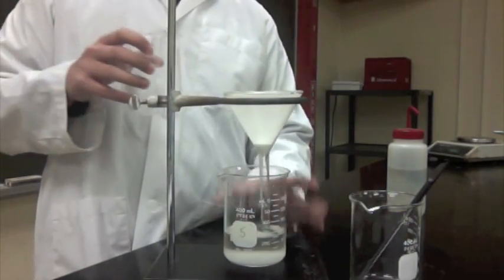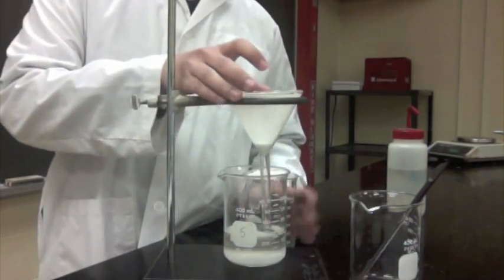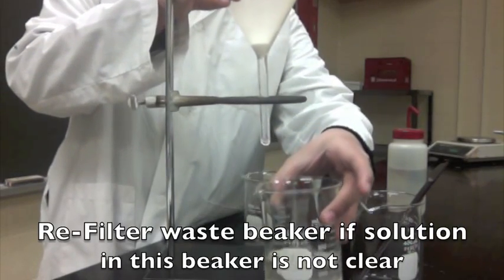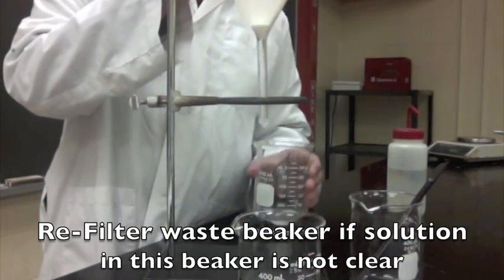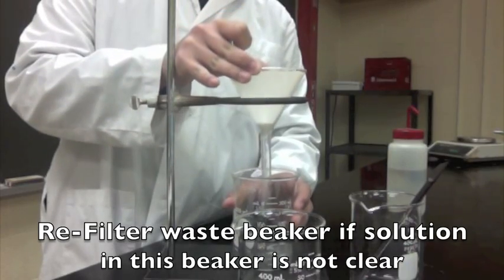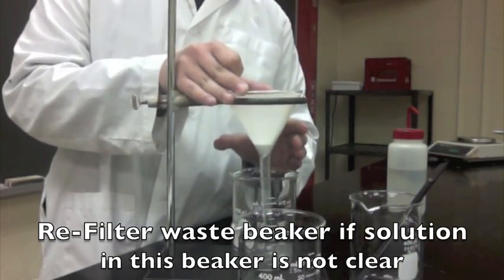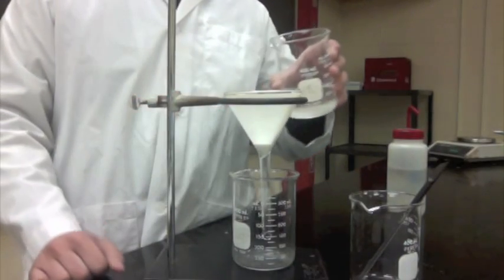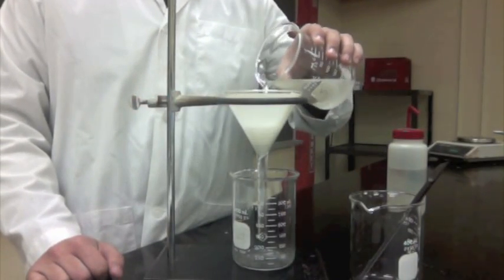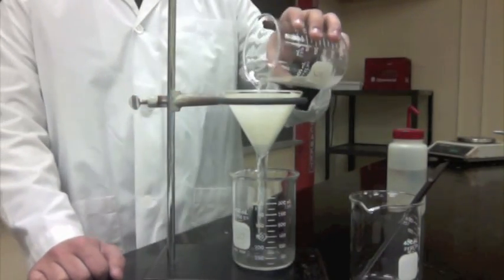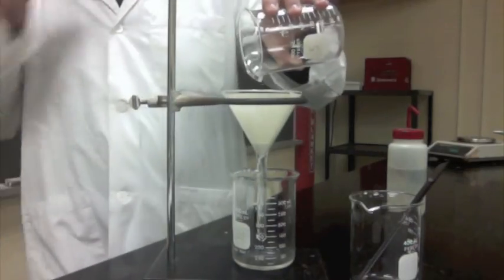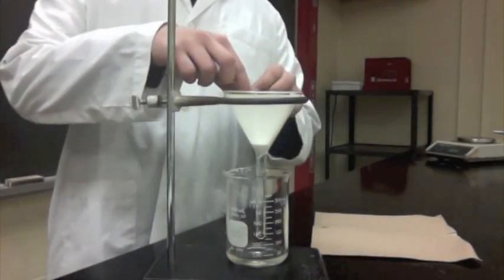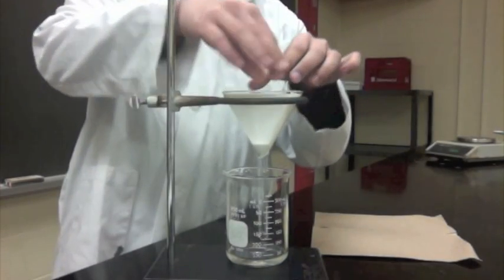Take another waste beaker, make sure it's clean as it might contaminate the product, and put it under the funnel. Take the solution again and put it down the funnel. Once all of your solution is drained, take out the paper filter slowly and carefully.